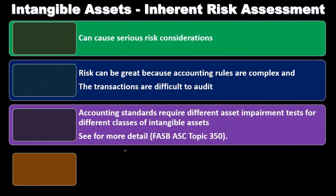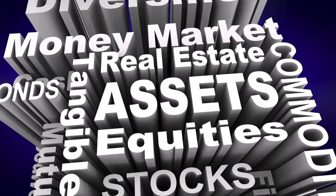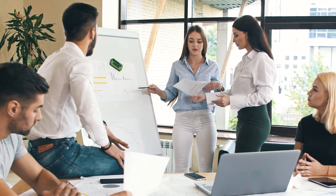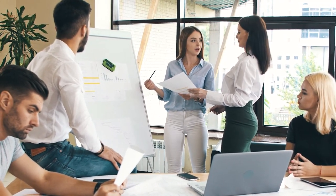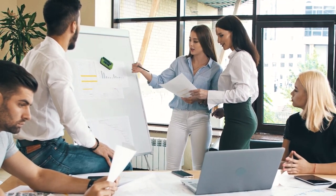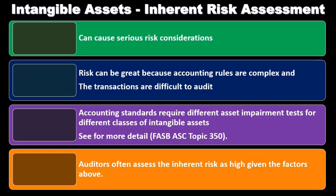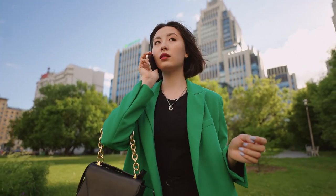These issues are specific to the types of intangible assets owned by a particular company — for example, companies with movie rights or specialty trademarks or highly valued technology. We want to make sure those assets are being properly recorded. Auditors often assess the inherent risk as high given these factors. It depends on the industry how much these intangible assets will be present, but when they are material to the financial statements, they are things we want to look into.